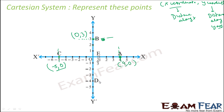For point D, the x-coordinate is the distance along the x-axis from the y-axis, which is 0 — it lies on the y-axis. The y-coordinate is the distance along the y-axis from the x-axis, which is minus 4. So point D is 0 comma minus 4.